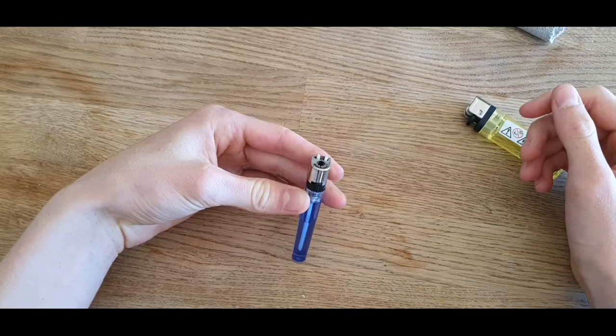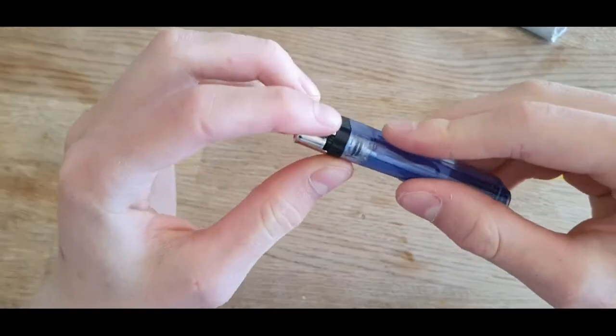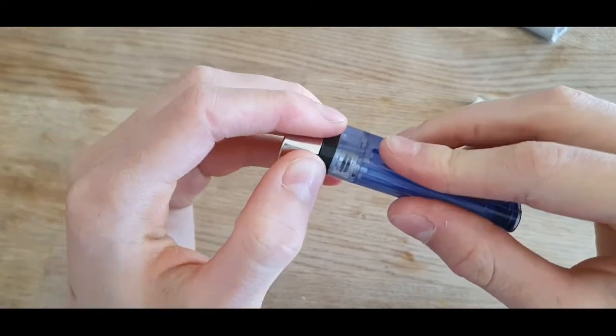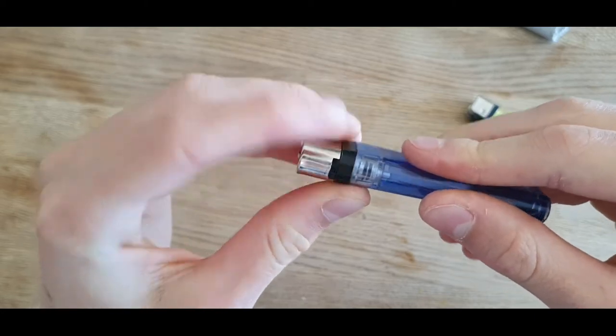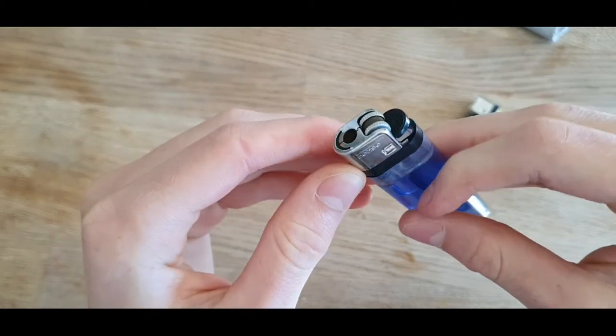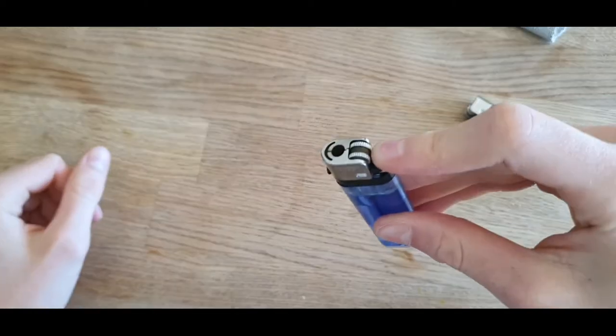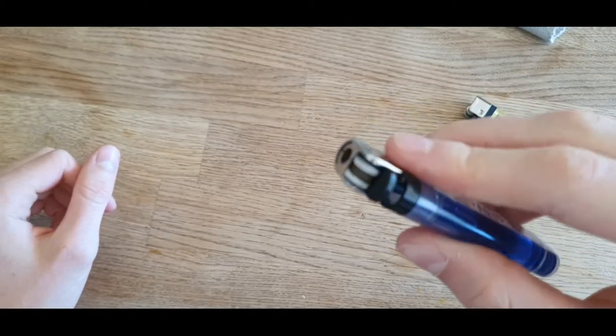So you want to get a lighter and make sure it has the option of turning it down and up to increase the level of fire coming out. Then you're going to get something pointy like a screwdriver.